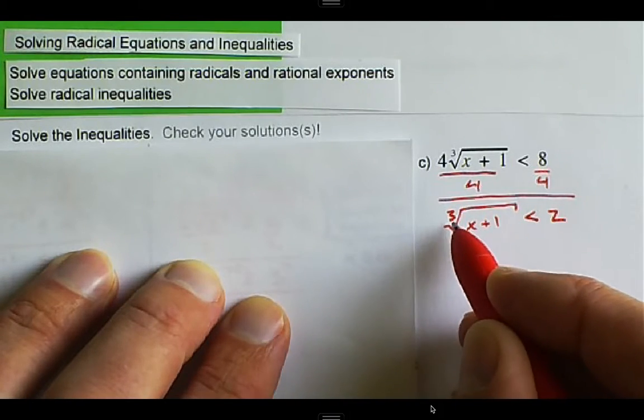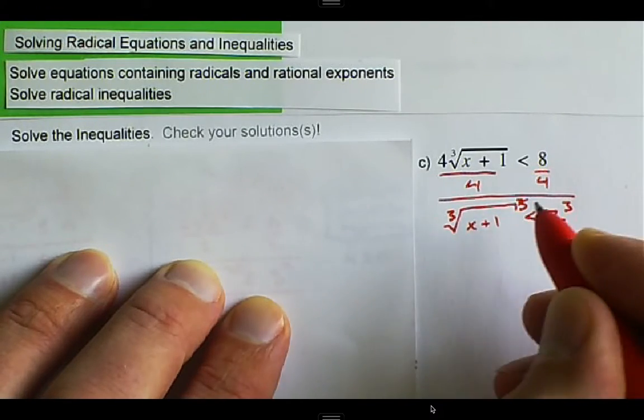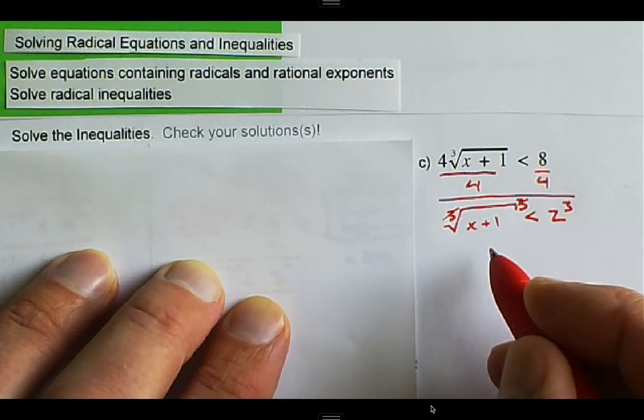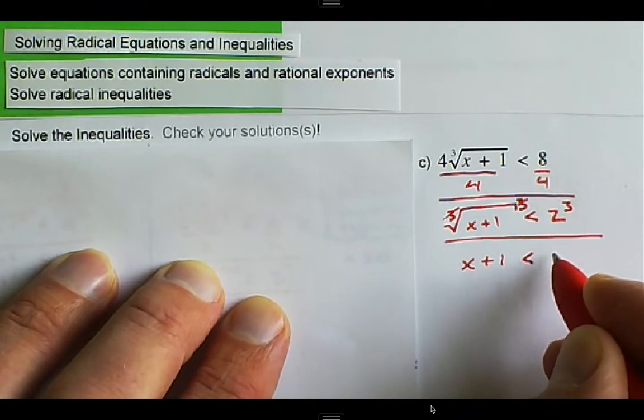Now we have to get rid of the cube root, so we can cube both sides. The cube cancels the cube root, and we're left with x plus 1 is less than 8.